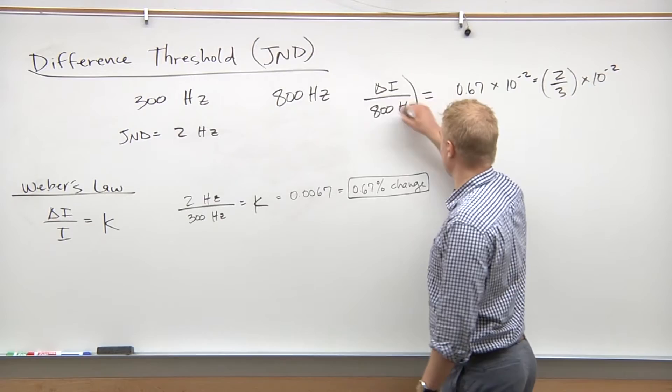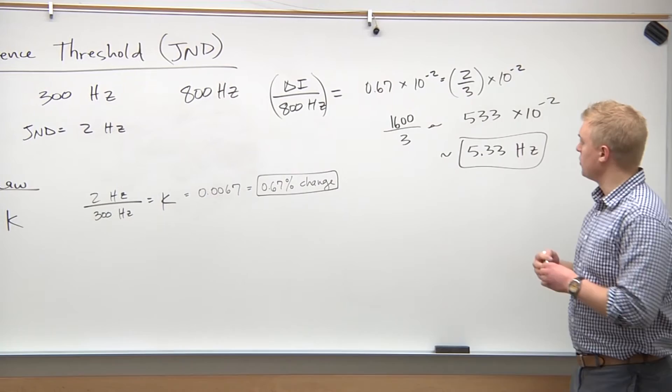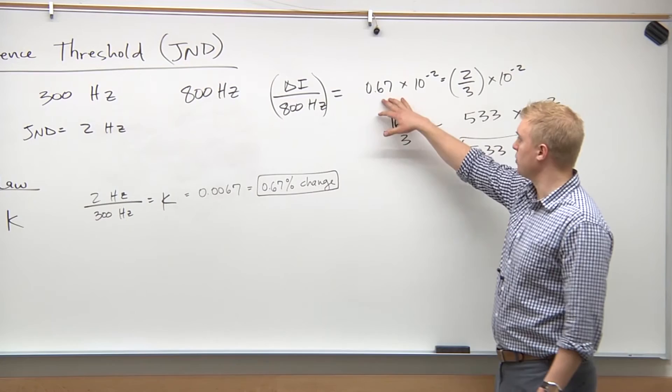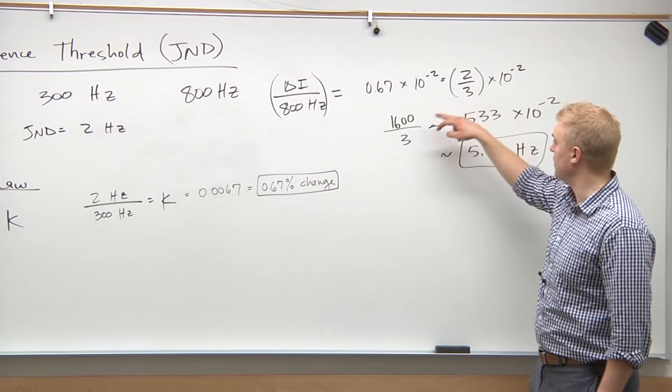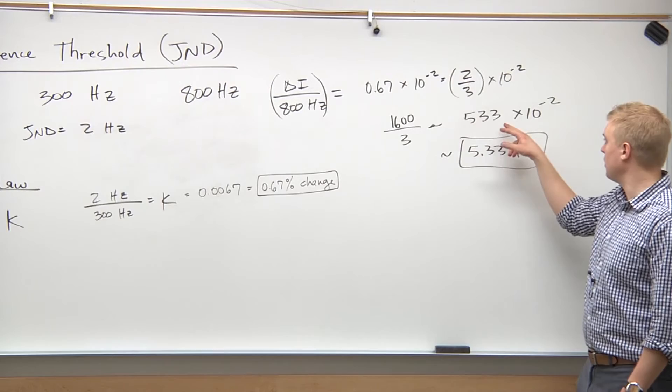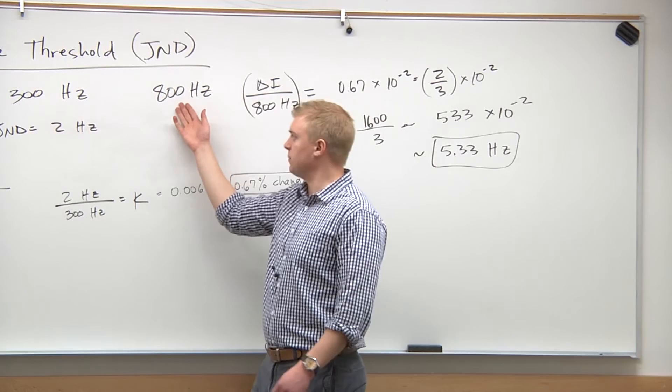It's just simple rearranging with this equation here. I just put this 0.0067 in scientific notation, so 0.67 times 10 to the negative two, or two thirds times 10 to the negative two. Then we just do cross multiplication. So 800 times two is 1600 divided by three is about 533, actually 533.33, and then just bring that decimal place two places back, and we got 5.33 hertz.